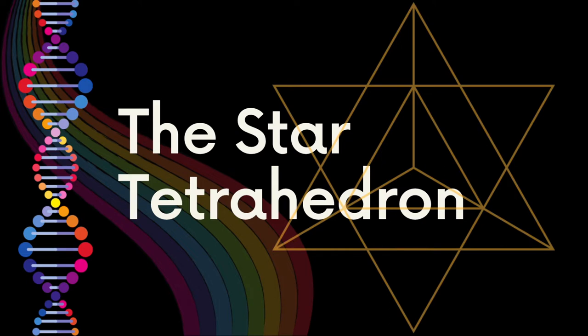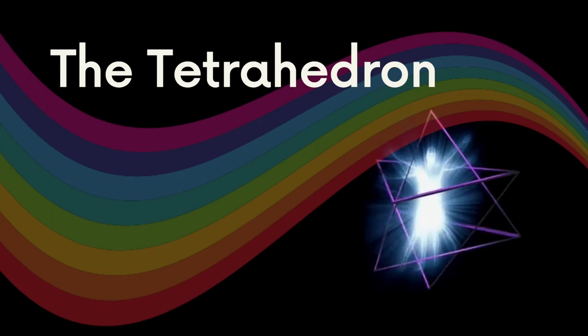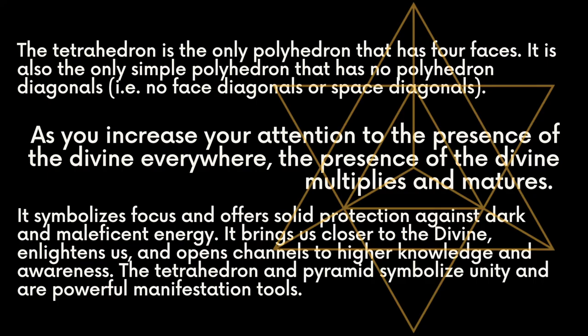We continue with the Star Tetrahedron, one of the central Sacred Geometric Forms in our Lightbody Activation Process. At the core of the Star Tetrahedron is the tetrahedron. The tetrahedron is the only polyhedron that has four faces, and also the only simple polyhedron that has no diagonals.